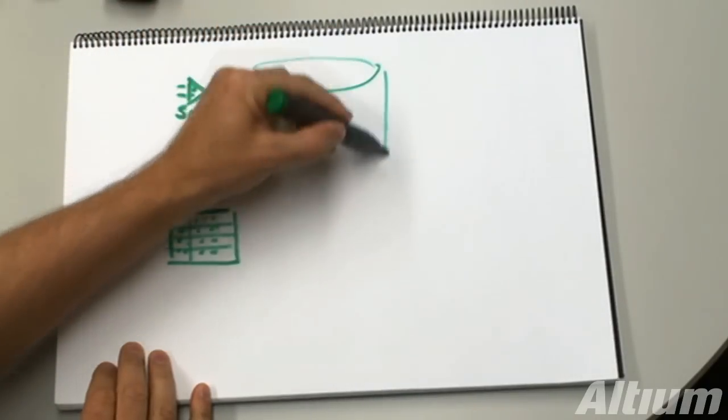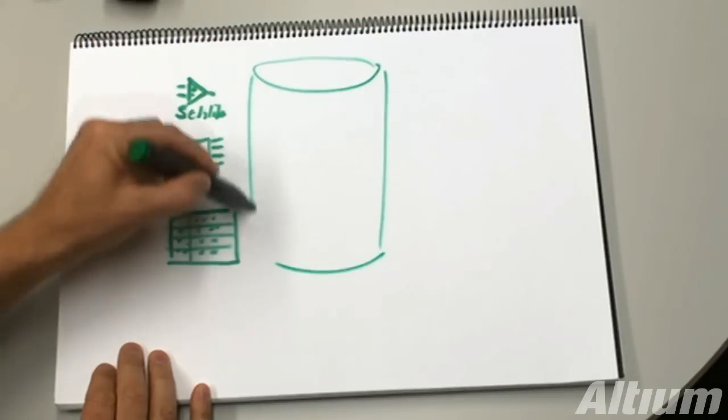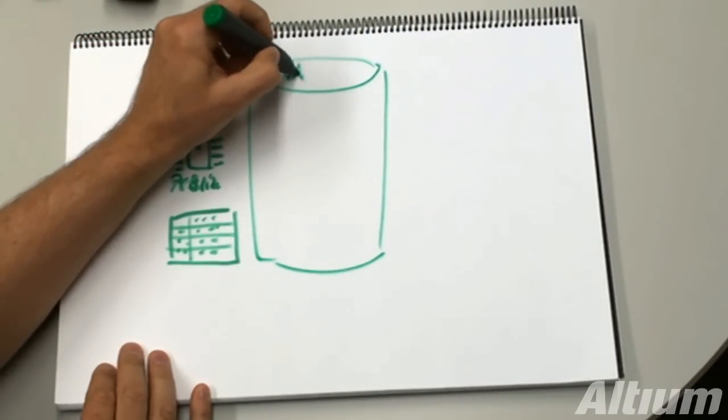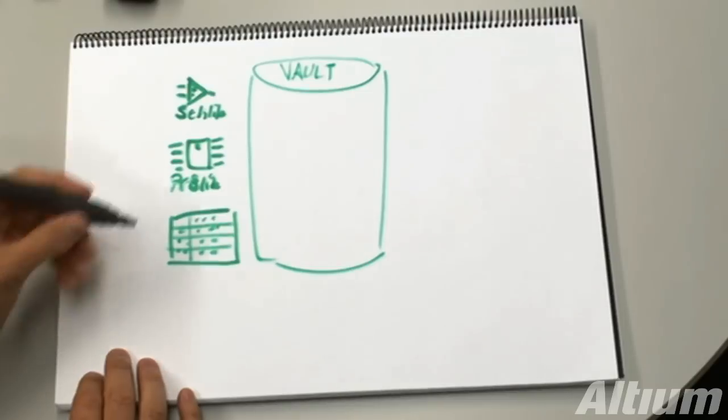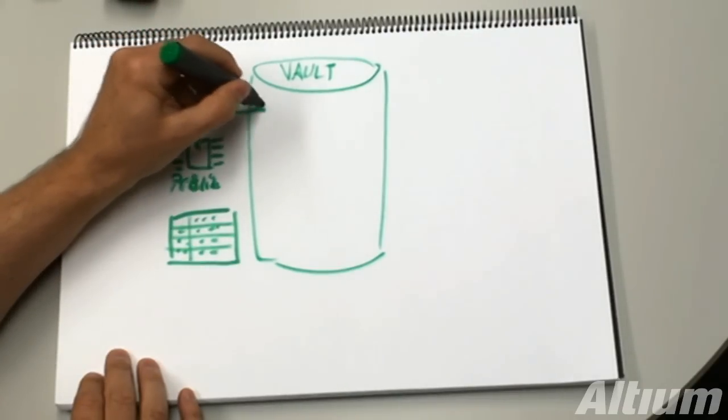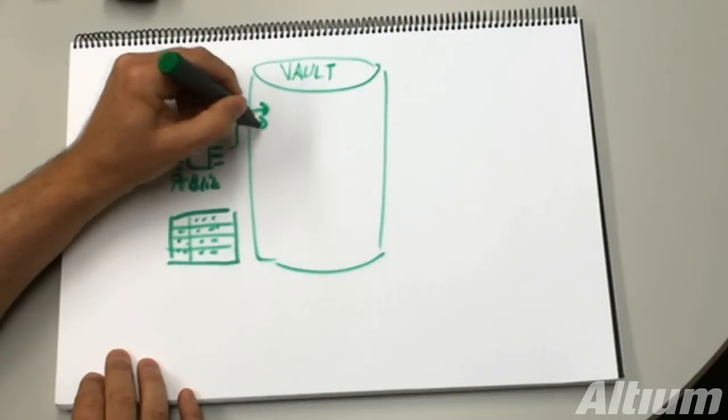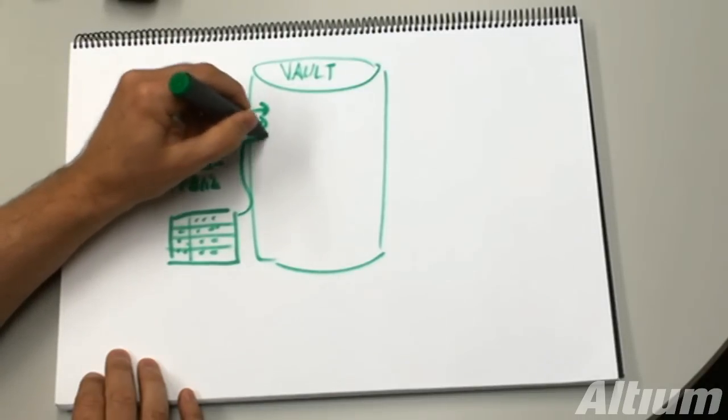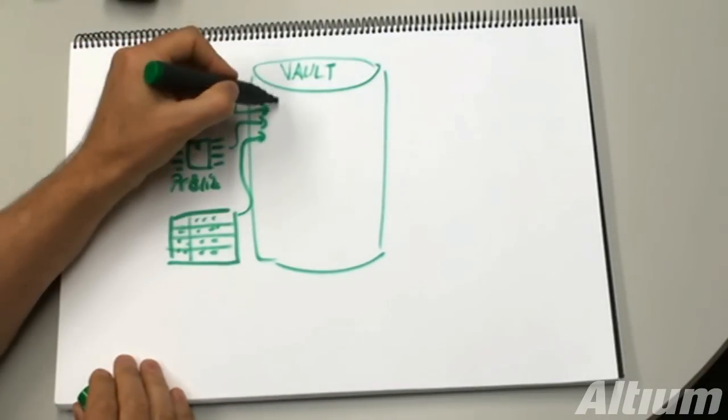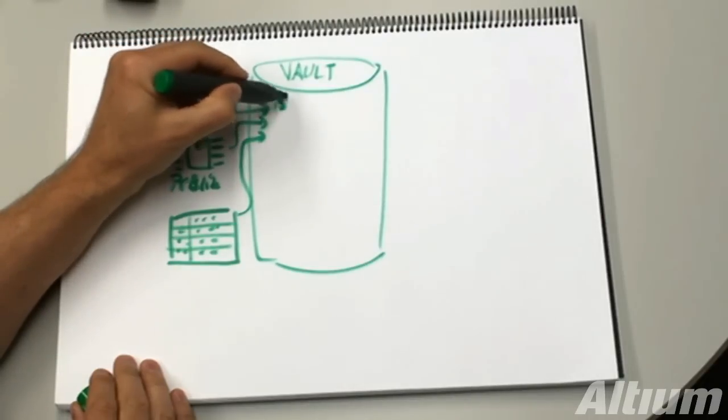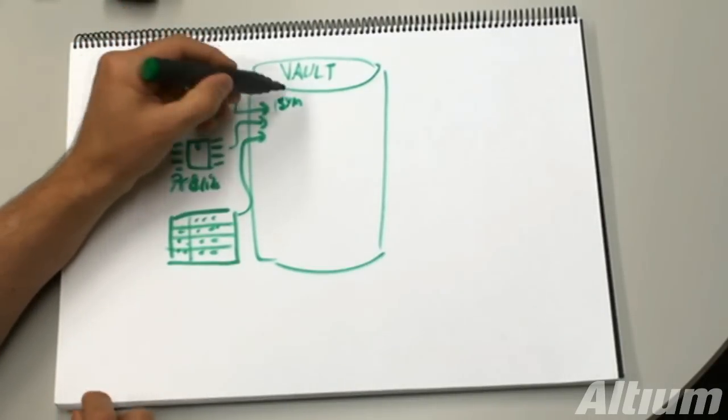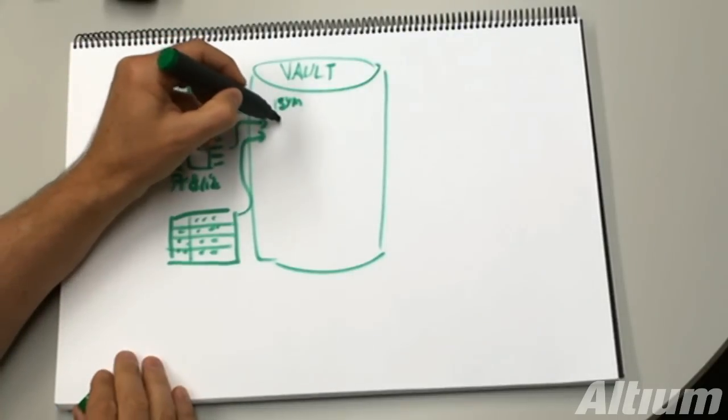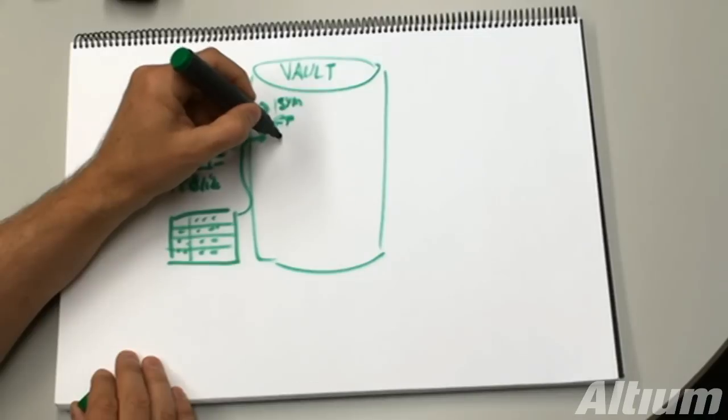And these, at the heart of the system, as I mentioned, is the vault or enterprise vault server. These things are all released into the vault and become a symbol. In the case of a schematic library part, that'll become a symbol, typically. Footprint will become a footprint object or a PCB library part.